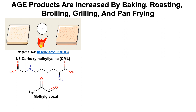Looking at the simplified cartoon here, we can see that starting from bread, when you heat bread for some period of time, that forms the brown, the crisp, and among the molecules found in the brown and the crisp are AGE products. Two of the AGE products formed during the browning process are N6-carboxymethyl lysine, also known as CML, and methylglyoxal. I'm going to talk about those two AGE products a lot as I go through this video.